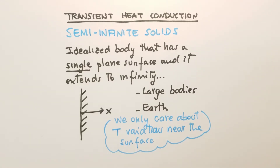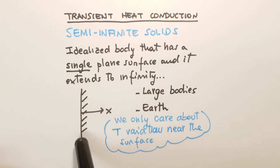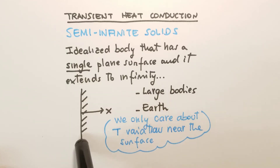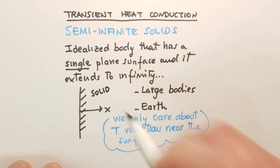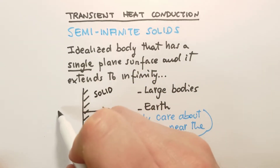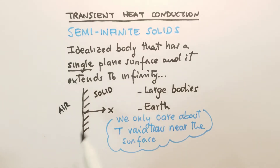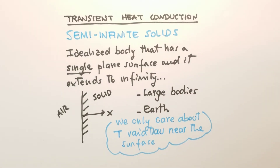First we need to define what a semi-infinite solid is. It's an idealized body that has a single plane surface and it extends to infinity. Schematically, we represent it with a line: on the right of this line we have the solid body, whereas on the left we can have, for example, air. We want to change the boundary conditions on the surface and study how the temperature profile changes over time.